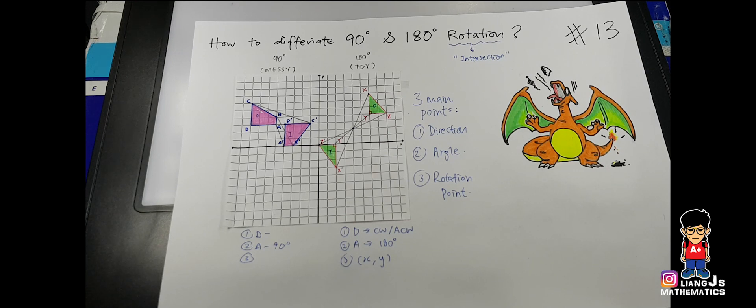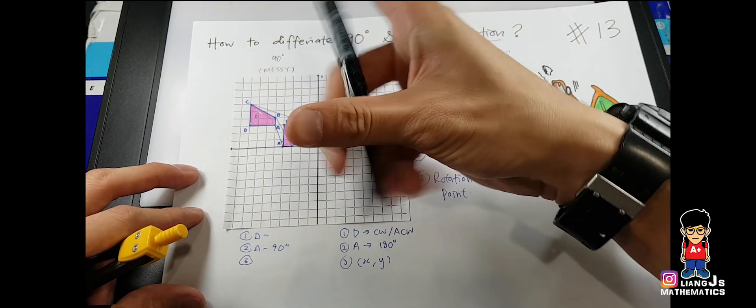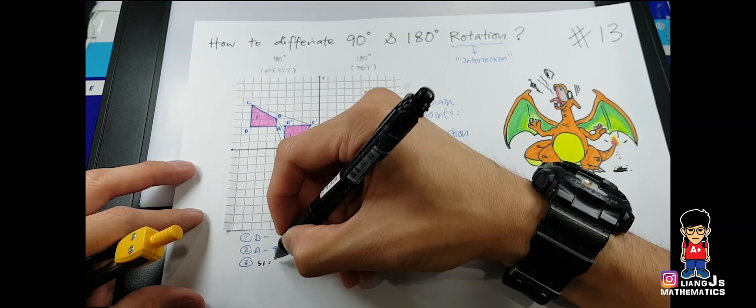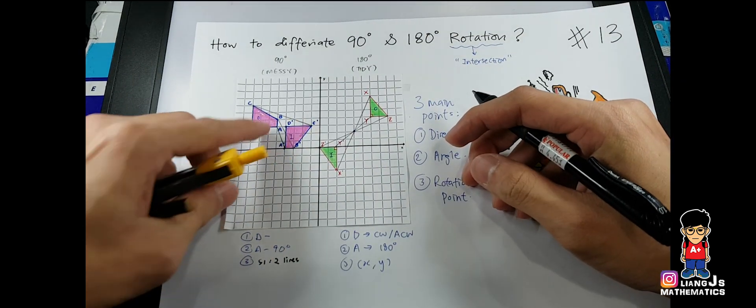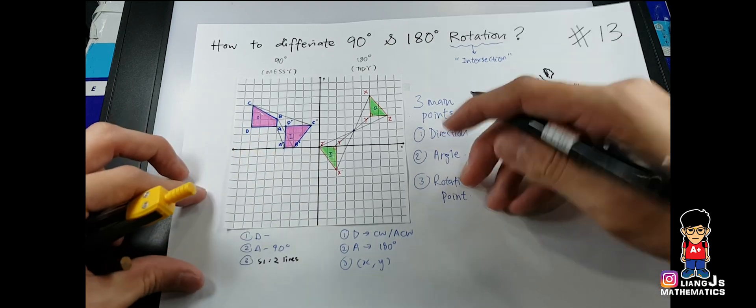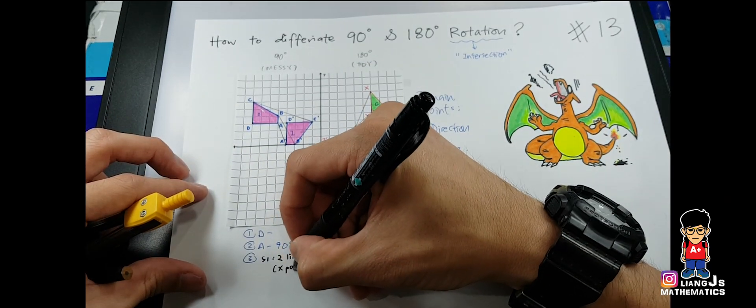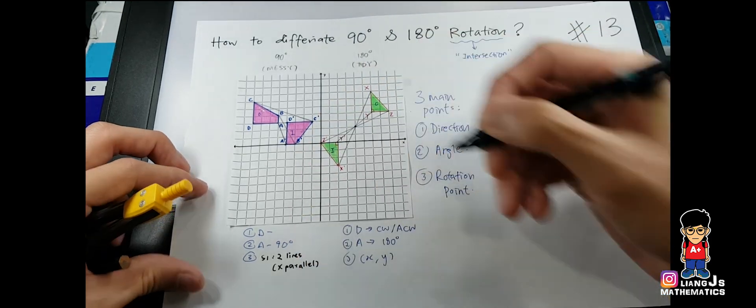So number one, I have to write the steps to you, so easier for you to remember. So we have step number one. To find your 90 degree rotation point, you need to select two lines. Two lines from all the four lines that you connect. Two lines which are not parallel. So which line I will select here?